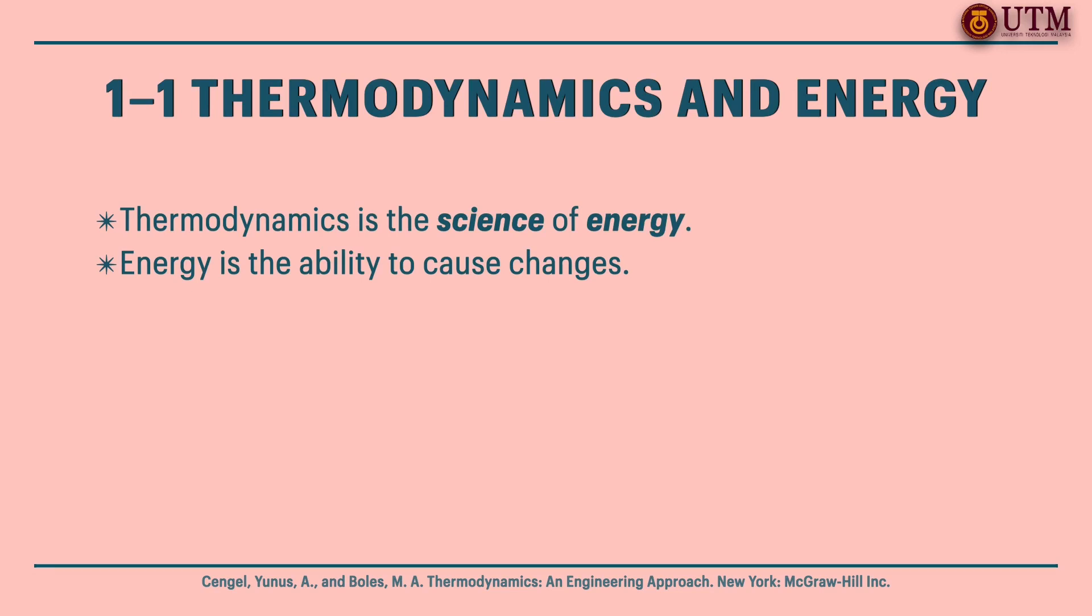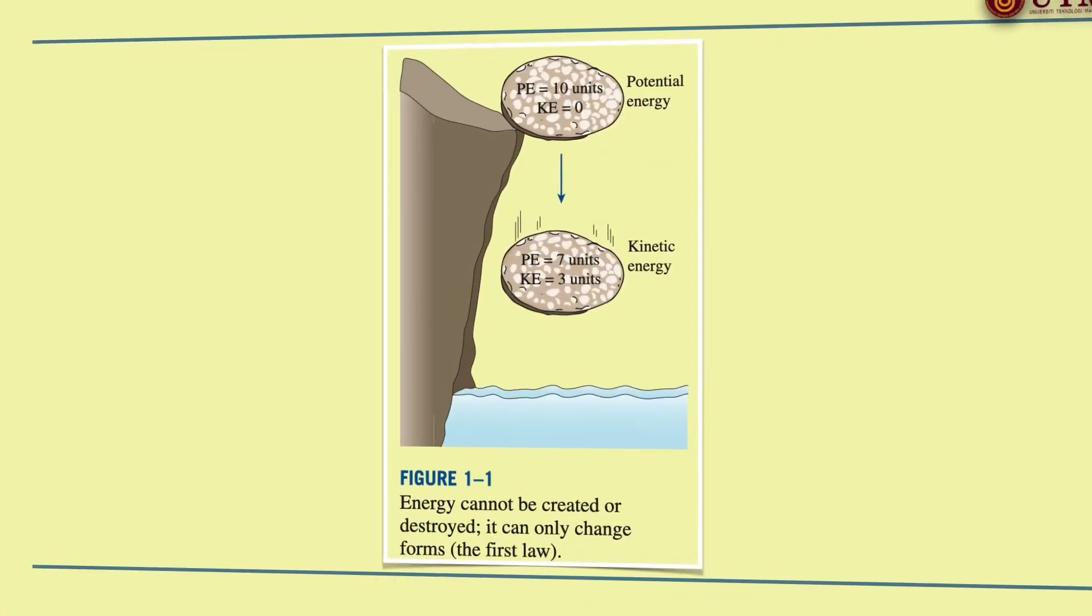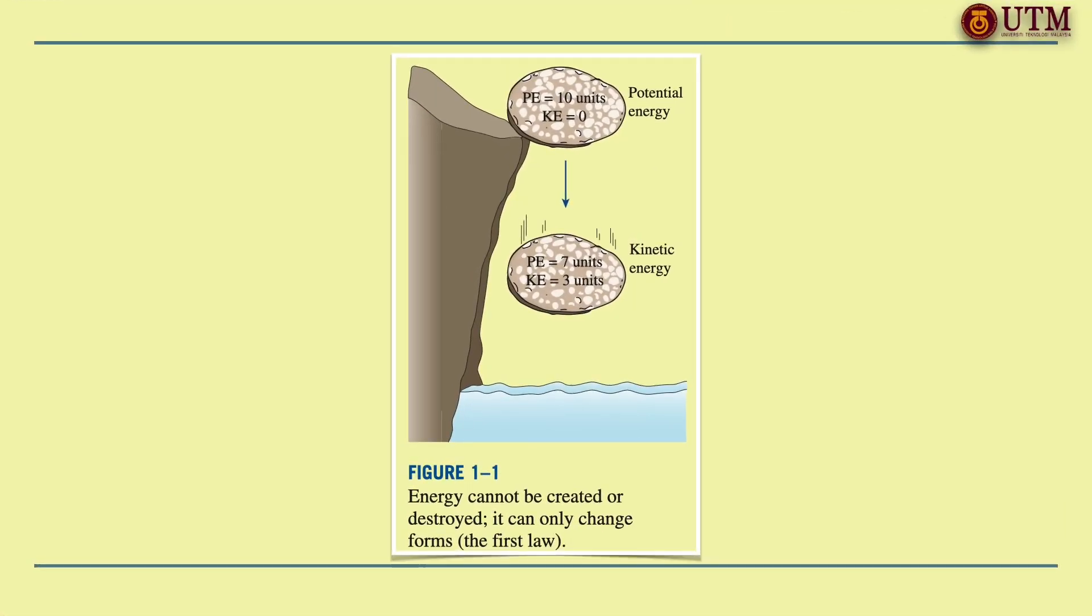It simply states that during an interaction, energy can change from one form to another, but the total amount of energy remains constant. As we can see in figure 1.1, a rock falling off a cliff, for example, picks up speed as a result of its potential energy being converted to kinetic energy. That is, energy cannot be created or destroyed.